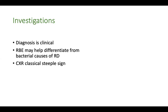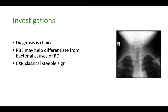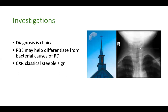In croup, the diagnosis is mainly clinical, so investigations have very limited role. Routine blood examination may help differentiate a bacterial cause of respiratory distress — for example, if bacterial tracheitis is suspected. Chest X-ray would classically show a steeple sign, where the narrowing of the laryngeal airway causes a shape similar to a church steeple.